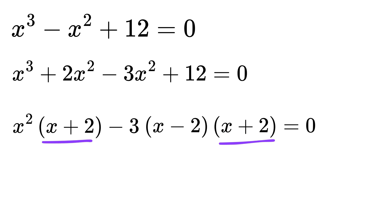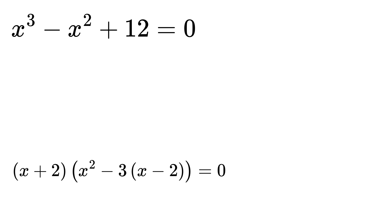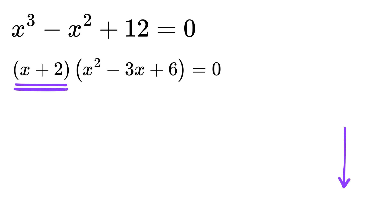So, take x plus 2 as common from both of them to get x plus 2 times x squared minus 3 times x minus 2 equals 0. Or, x plus 2 times x squared minus 3x plus 6 equals 0. Then, this will give one of the roots as x equals minus 2.